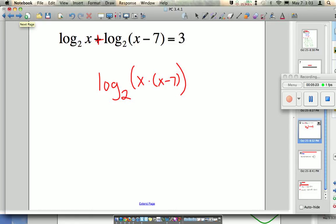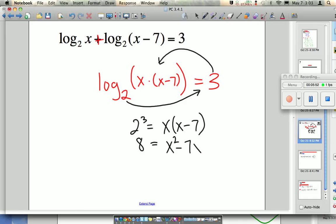On the right-hand side, I still have 3. But now I can use my exponential log loop to rewrite this. 2 to the third equals this product, x times x minus 7. I have successfully gotten rid of the log. This is now just numbers and x's. 8 equals x squared minus 7x. I multiplied everything out, and now I subtract 8 from both sides. x squared minus 7x minus 8. At this point, you should know multiple strategies to solve a quadratic.